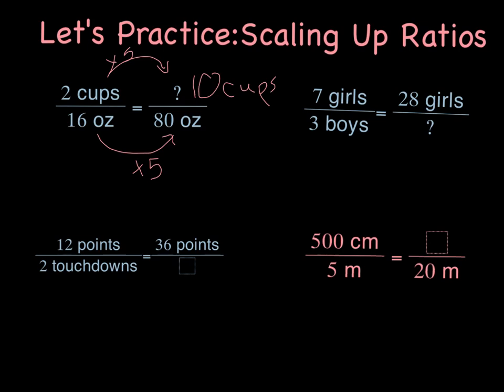Next problem: we have seven girls to every three boys. If I go from seven girls to twenty-eight girls, I know that's multiplying by four. So I need to do the same thing with the boys. Now I have for every twenty-eight girls, I have twelve boys.